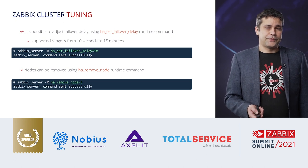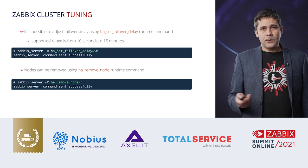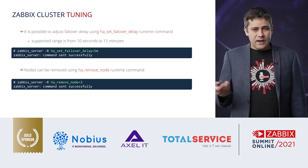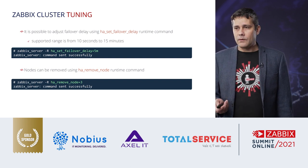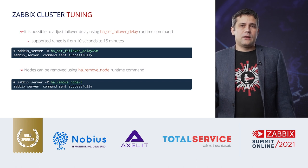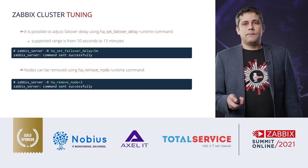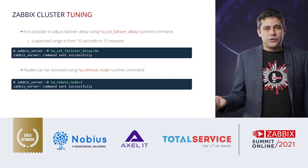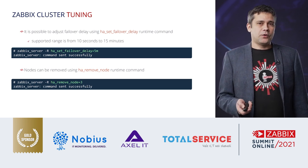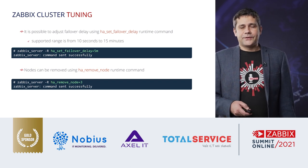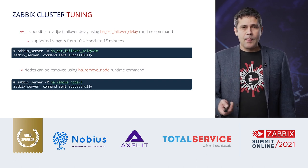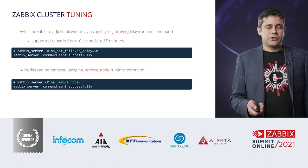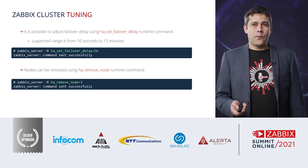To tune the cluster, you can change the failover delay. The default is one minute, but you can set it from 10 seconds to 15 minutes. To remove old nodes you no longer need, issue the command `zabbix_server -R ha_remove_node` with the node ID. To add nodes, simply start Zabbix server in cluster mode and specify the node name — node names must be unique.